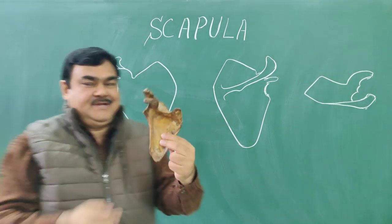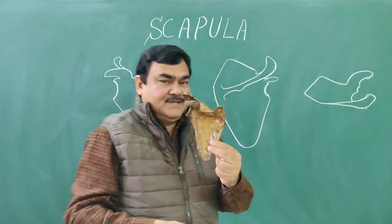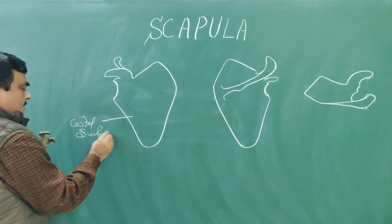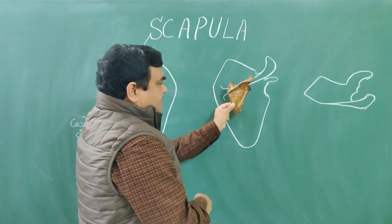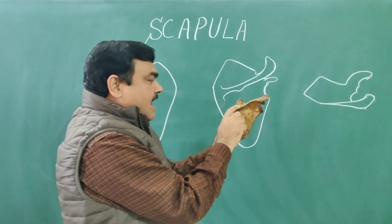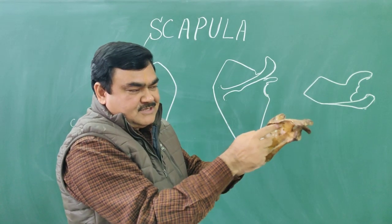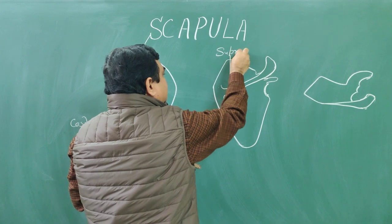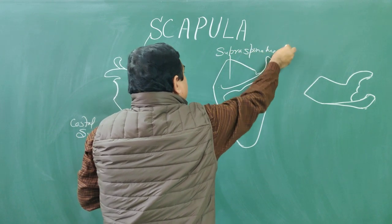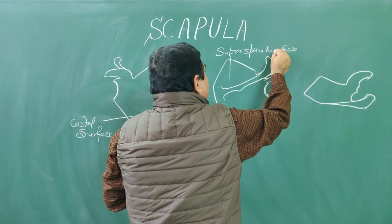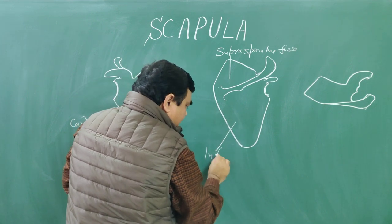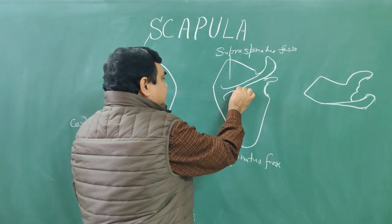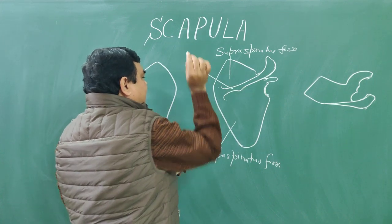This anterior surface has concavity. The posterior surface is convex, and this surface is divided by the spinous process into supraspinous and infraspinous fossae. This fossa is supraspinous fossa, and this fossa is infraspinous fossa.